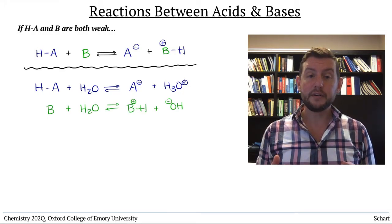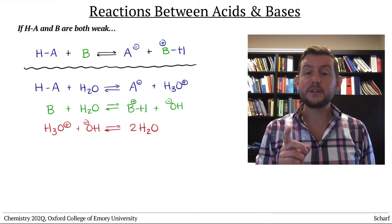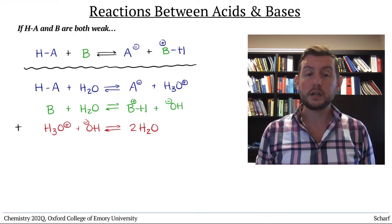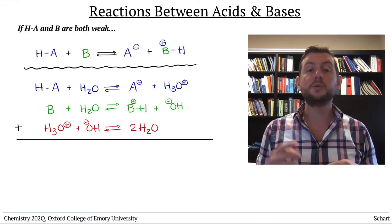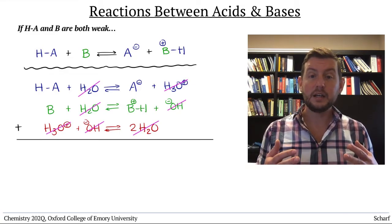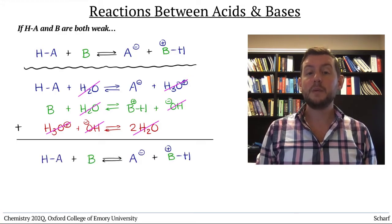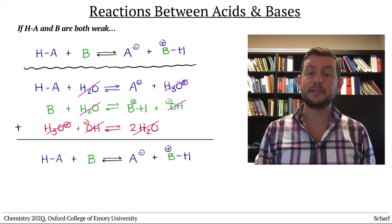If we add them together, and then add the reverse of the autoionization of water, the water molecules, hydronium, and hydroxide ions all cancel out, and we're left with the reaction of HA and B to make their conjugate base and conjugate acid, respectively.